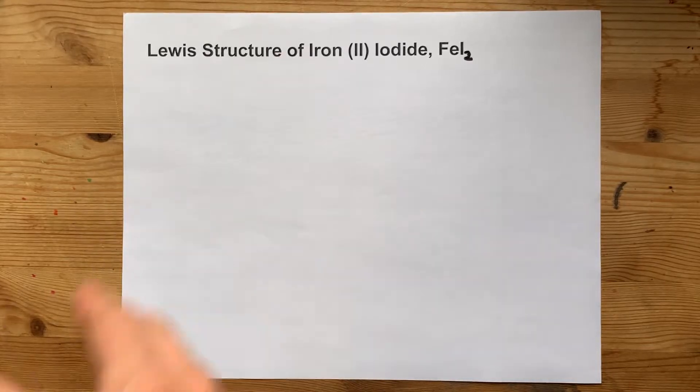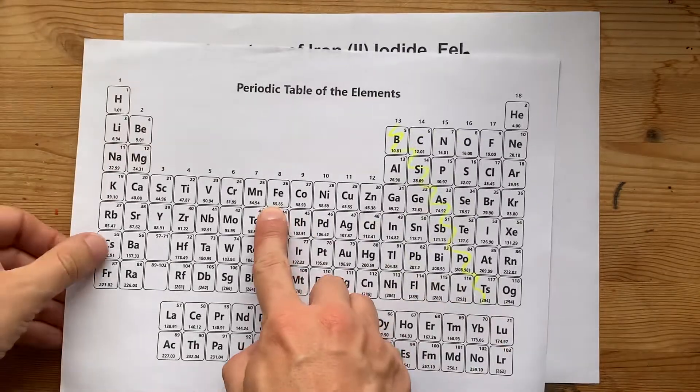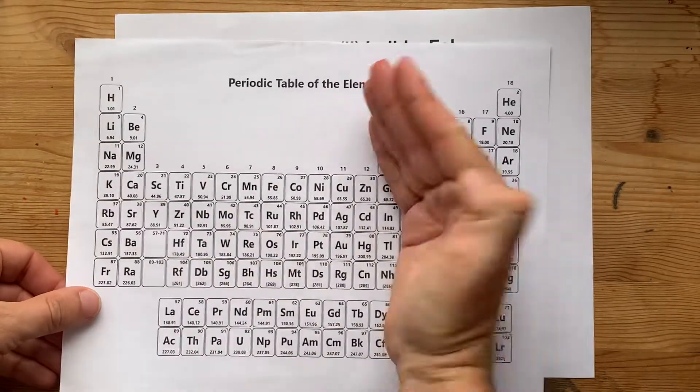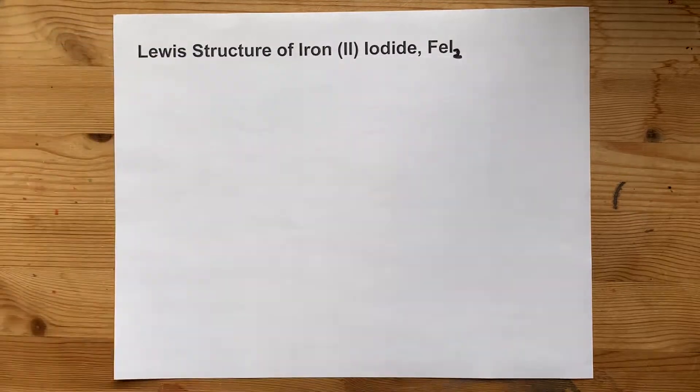Let's draw the Lewis structure for iron(II) iodide, which has a metal, iron. I know it's a metal because everyone knows iron's a metal, but it comes from the left side of the staircase on the periodic table.